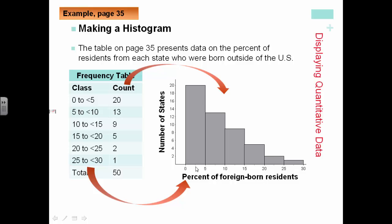We have percent of foreign-born residents and number of states. So as you can see, from 0 to 5 percent, that's this piece here, corresponds with number of states or count of 20.